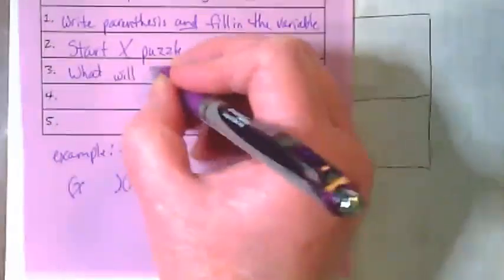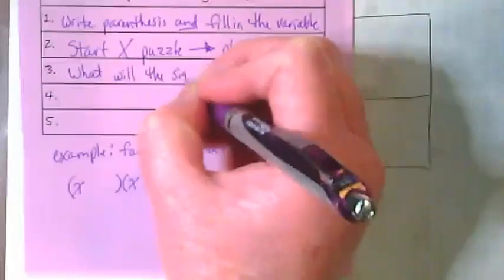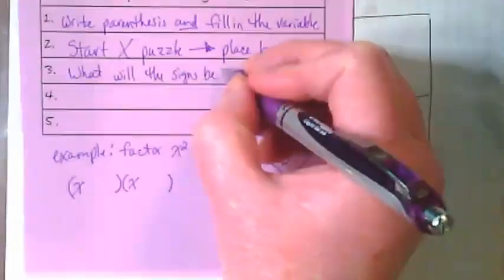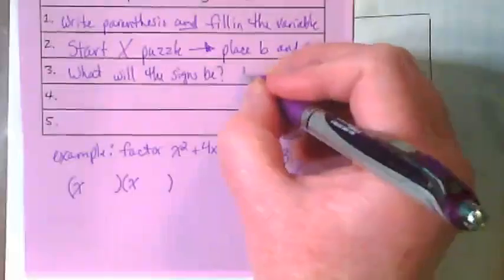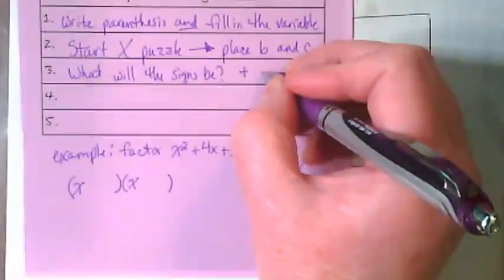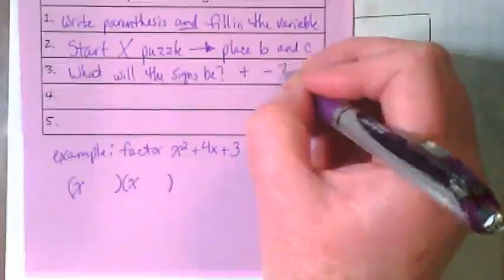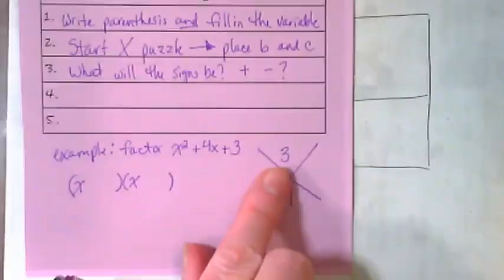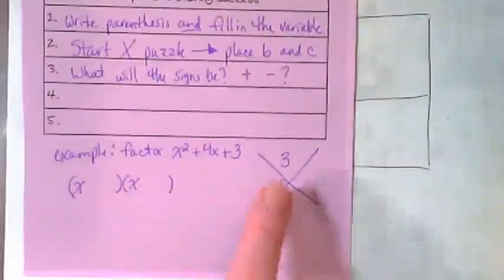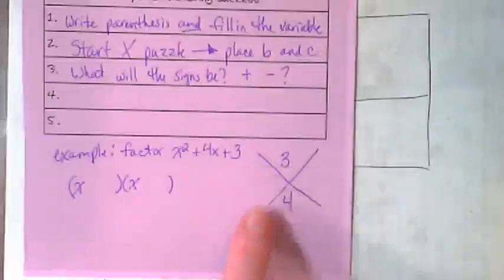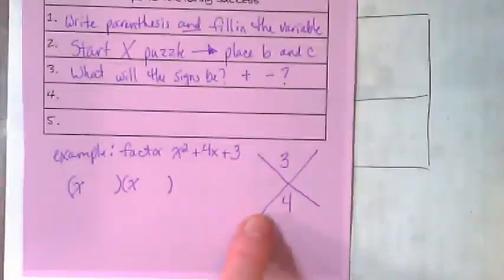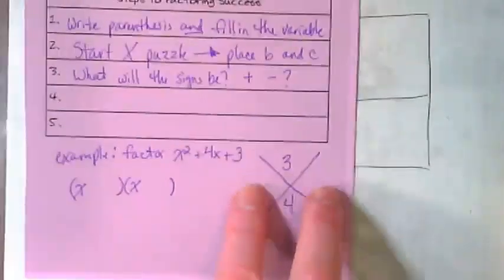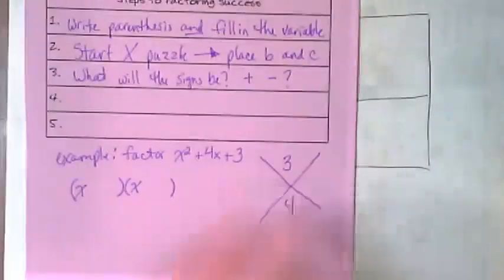Are we going to have a positive or a negative, or one of each? We know things about when we multiply numbers and when we add them that make those. We need to know what the signs are going to be before we can put in the two numbers to finish our x puzzle.